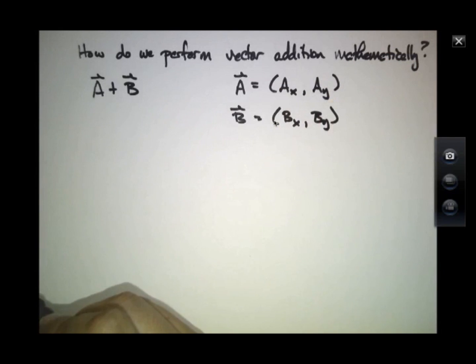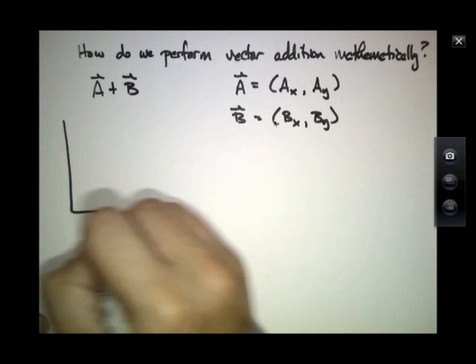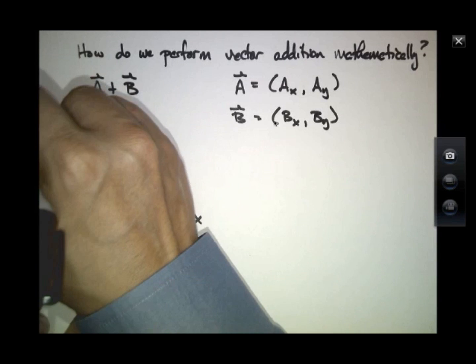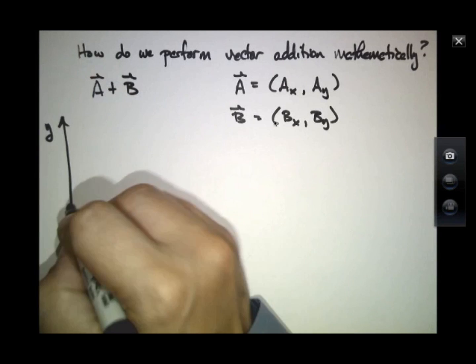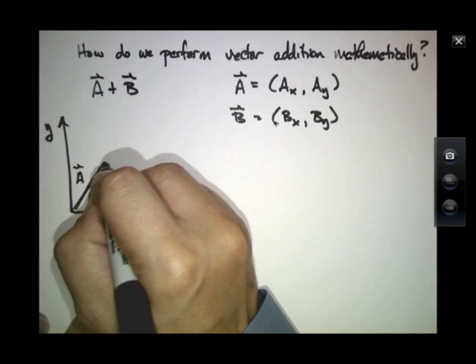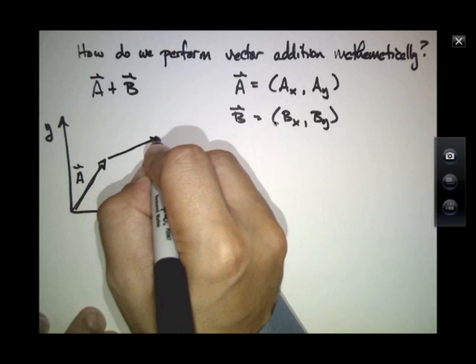it's helpful again to think about our coordinate system. So here might be the XY plane. A might look like this. And B might look like that.